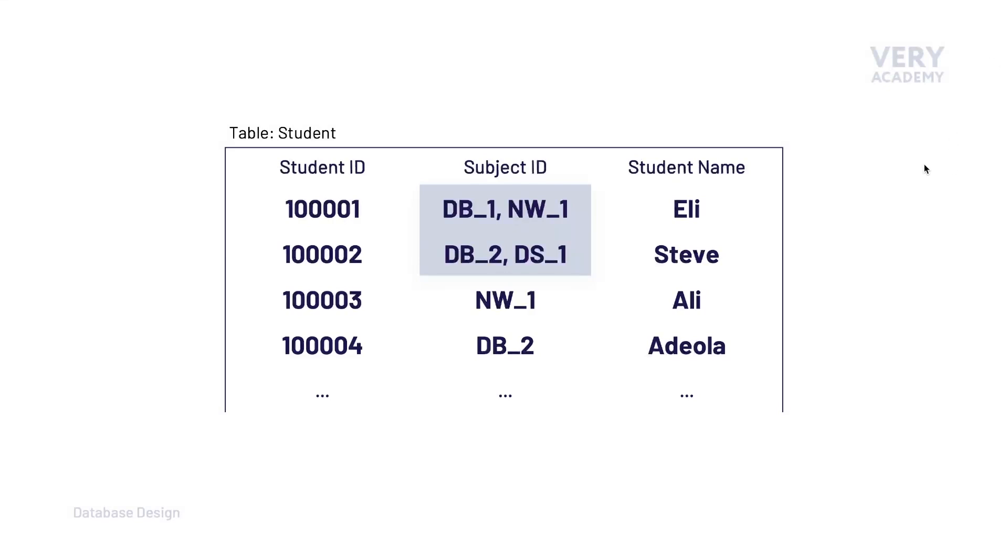So we can see from this example that when we think about the data that's going to be inserted for this particular student, the student may be attached or may be part of two classes or two subjects. So this student here may be taking two subjects, database one and network one.